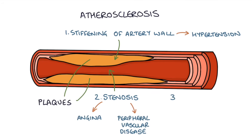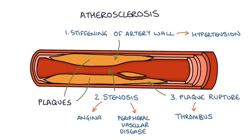The third problem is plaque rupture. This is where the plaque breaks off and produces a thrombus that travels down the vessel and blocks a distal part of that blood vessel, leading to ischemia. This is the main cause of acute coronary syndrome, or heart attacks.